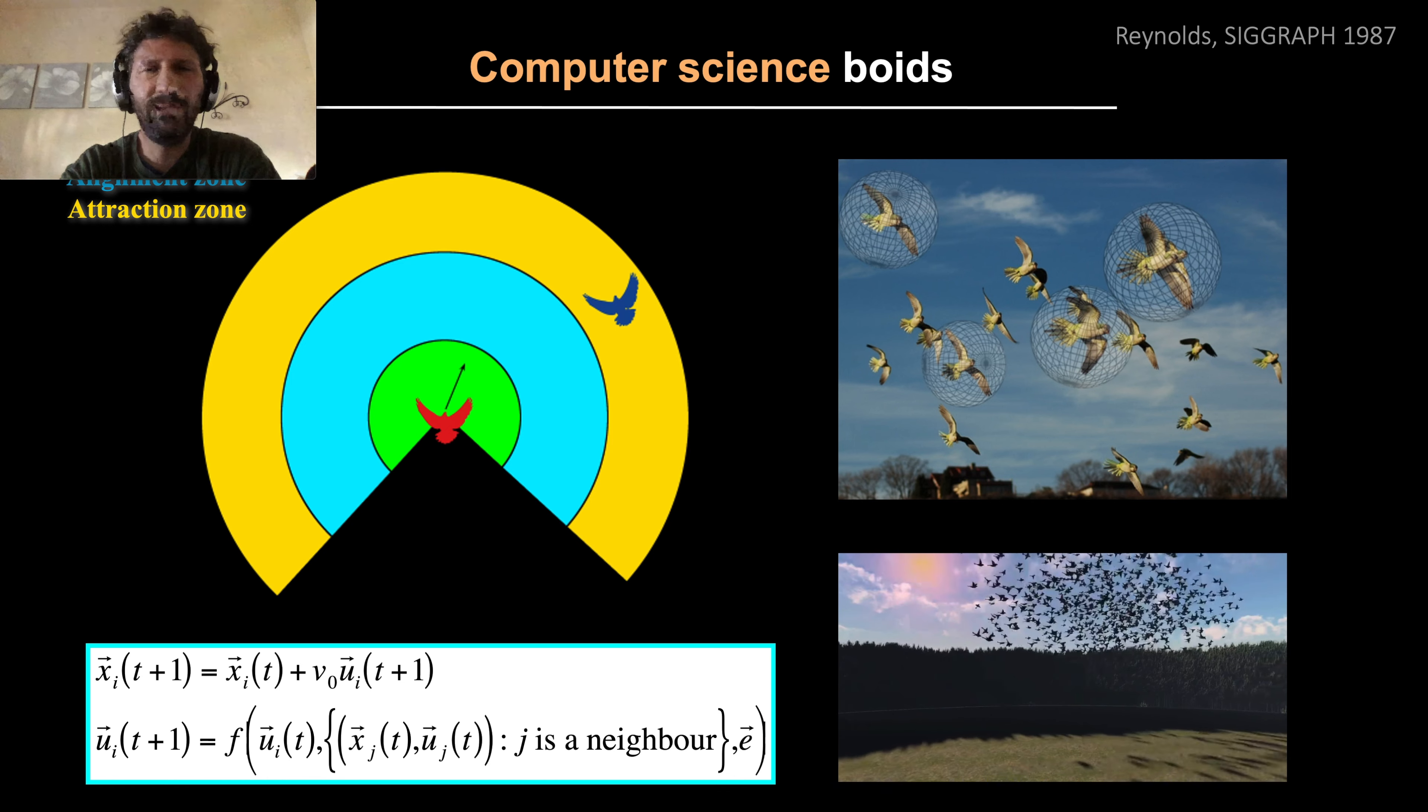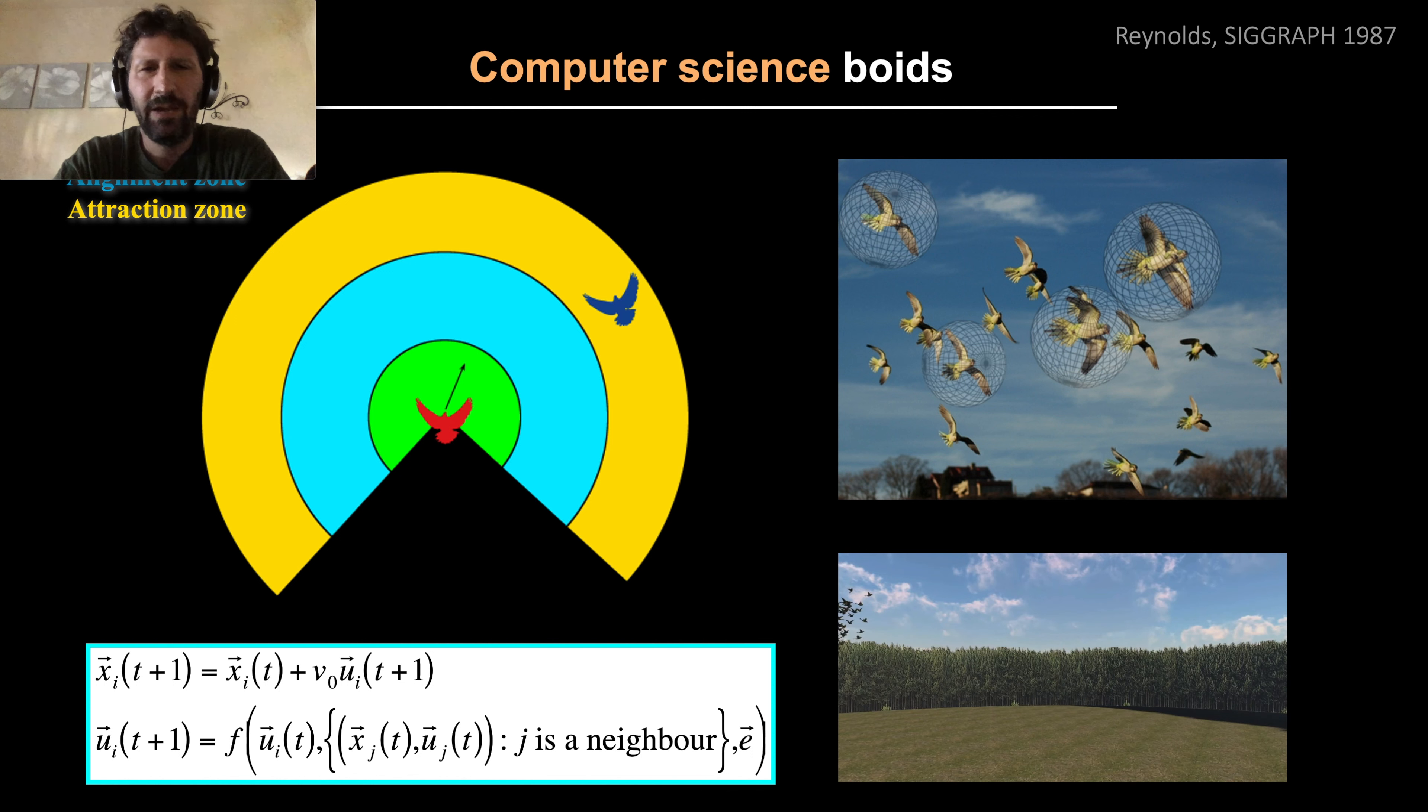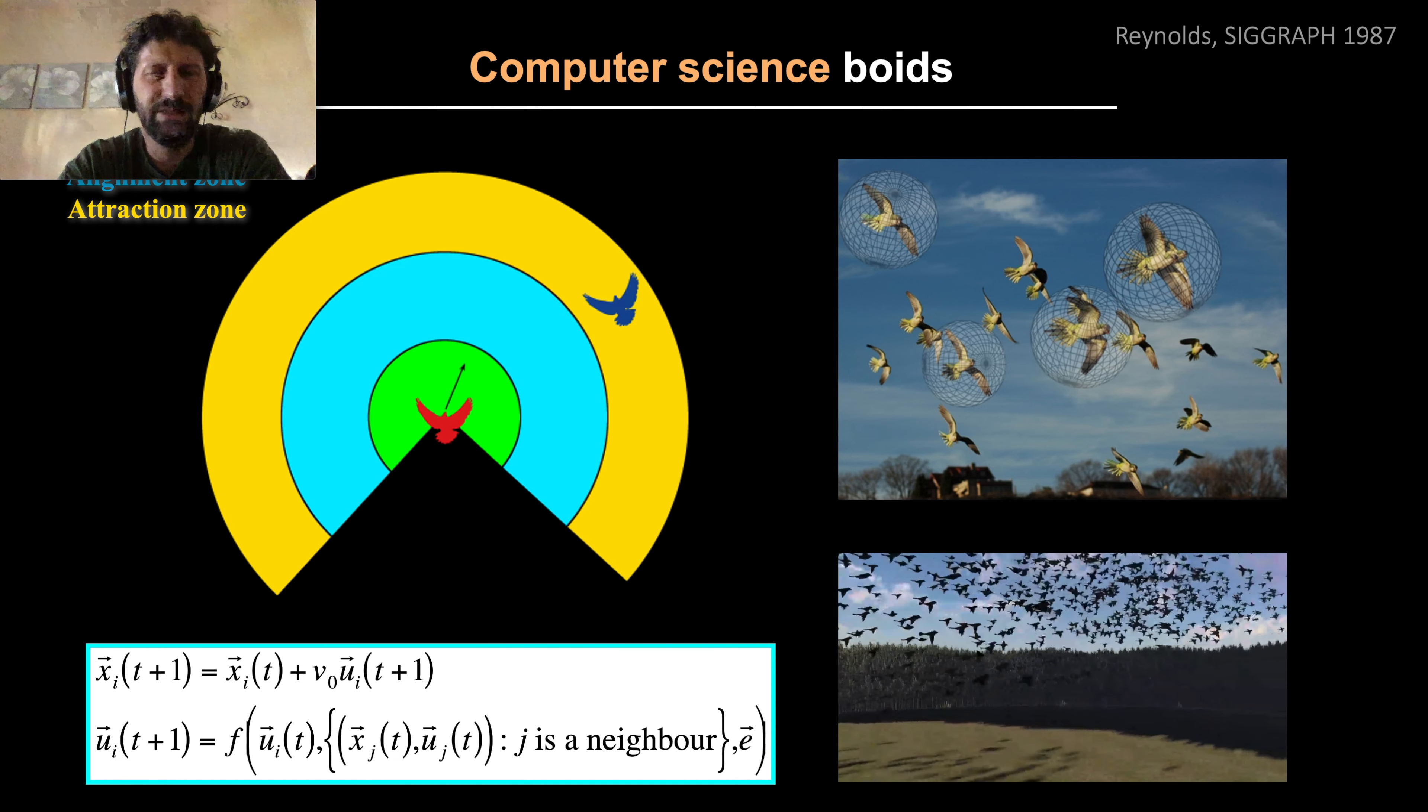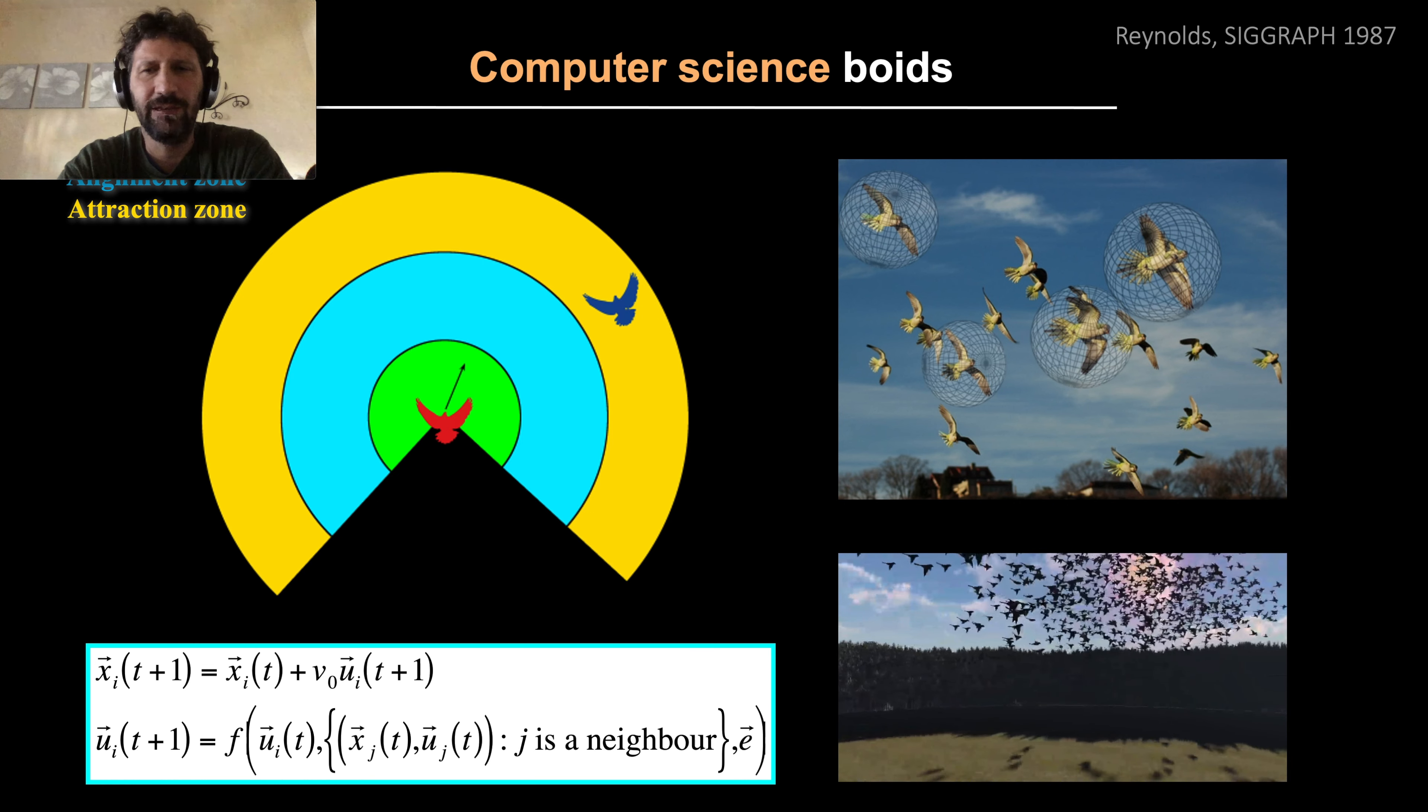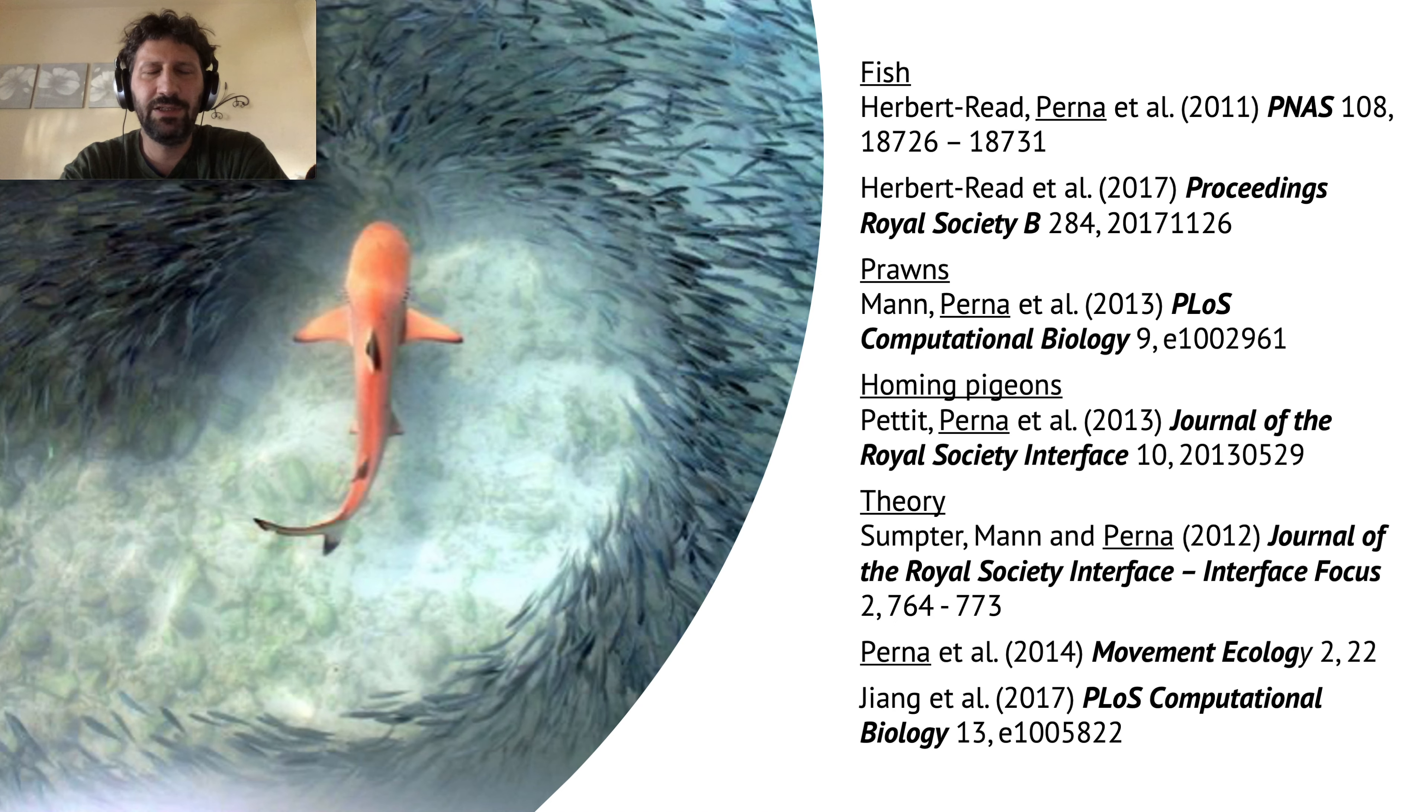All these models show that simple rules are sufficient to produce very complex and beautiful patterns. However, there is a limitation: these models are not fitted to empirical data. We don't know if the predictions of these models are actually valid for real flocks of animals. We cannot really make predictions about the real behavior of these animals. A large part of my research over a few years has consisted in trying to fit these self-propelled particle models directly on the movement measured through video tracking or GPS tracking of different animals: fish, prawns, pigeons, and different other types of animals.